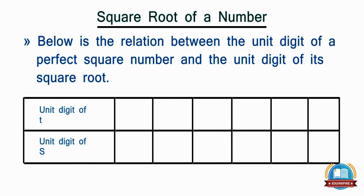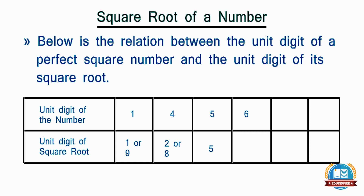If the unit digit of the number is 1, then the unit digit of the square root is 1 or 9. If it is 4, then 2 or 8. If it is 5, then 5. If it is 6, then 4 or 6. If it is 9, then 3 or 7. If it is 0, then 0.